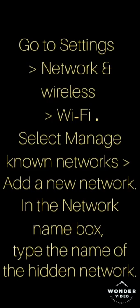To connect to a hidden network, go to Settings > Network and Wireless > Wi-Fi, select Manage Known Networks, then Add a New Network. In the Network Name box, type the name of the hidden network — the network name is case sensitive. Select the security type that the hidden network uses, then in the security key box type the network password — also case sensitive.